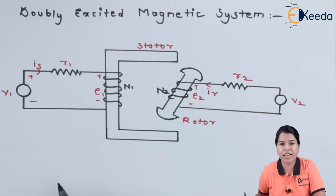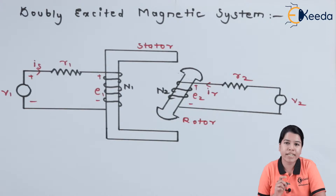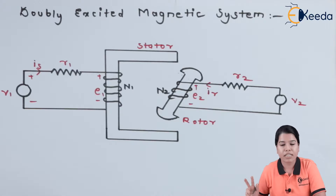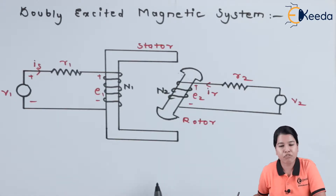Previously we studied the singly excited magnetic system. In a singly excited magnetic system, there is only one exciting coil and only one supply is given to that coil. In a doubly excited magnetic system, there are two exciting coils and a separate supply is given to both exciting coils. In the figure, you can see the diagram for the doubly excited magnetic system.